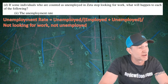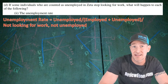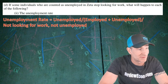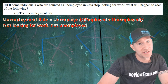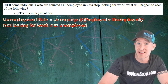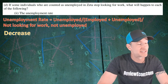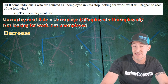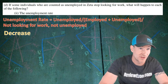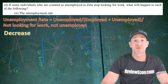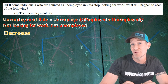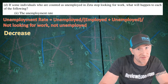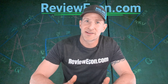For part D part two, we say what happens to the unemployment rate as a result. Remembering that the unemployment rate is unemployed people divided by employed plus unemployed, and that if you're not looking for work you're not counted as unemployed, the answer is simply decrease. This is one of the inaccuracies of the official unemployment rate — when there's an increase in discouraged workers, the unemployment rate falls as a result of these workers dropping out of the labor force.